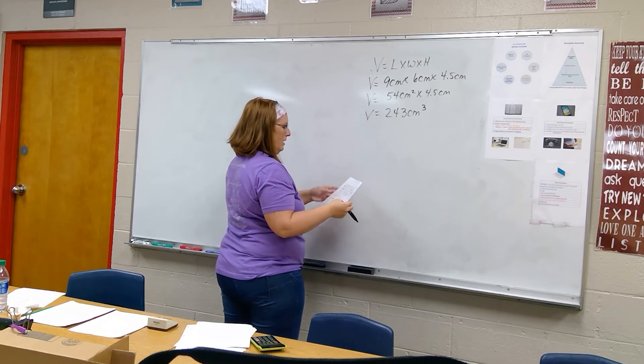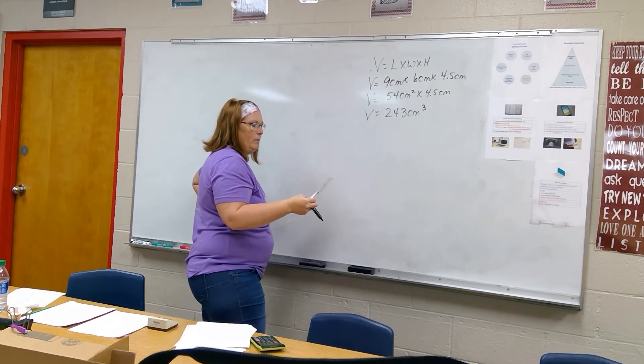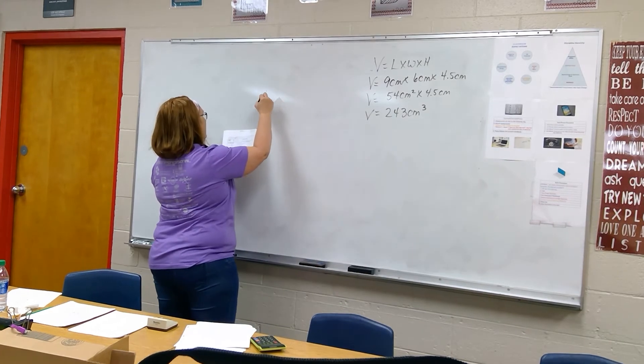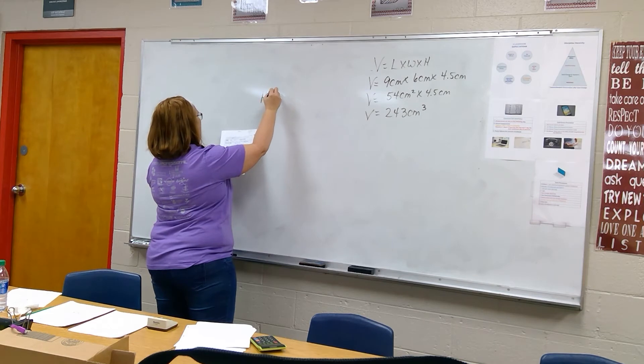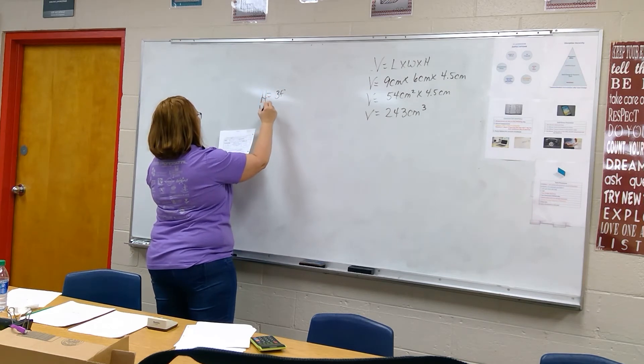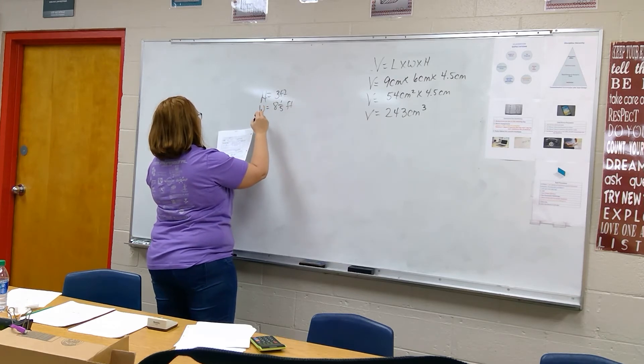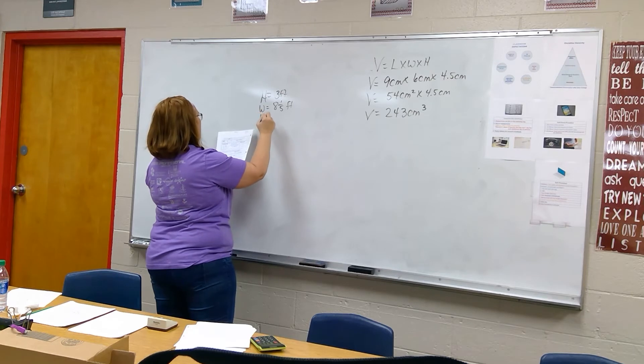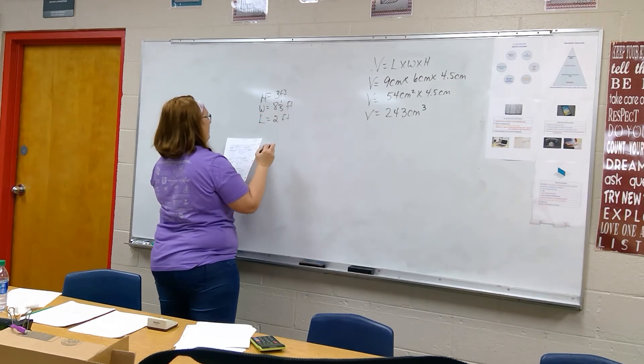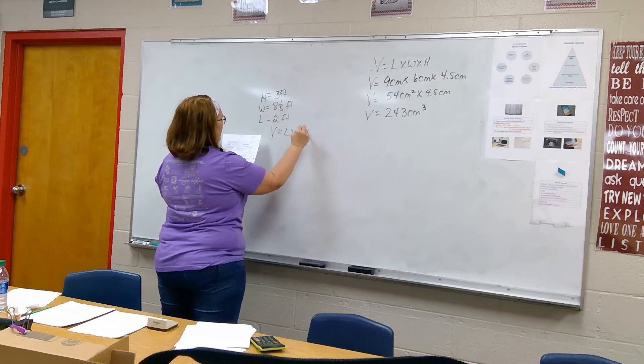On the back on number five it says a closed dresser is the shape of a rectangular prism. The dresser has a height of three feet, a width of eight and one-fifth feet, then it says a depth. Depth is just our length of two feet.